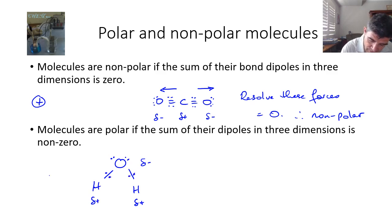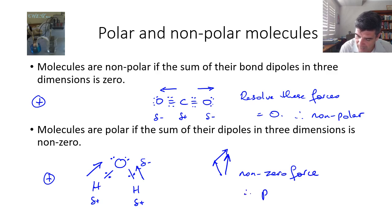In this case, if we take our point positive charge and put it here, it will go in this direction. If we put it here, it will go in this direction. If we add these together, that plus that, then we get a resultant direction, which means we have a non-zero force, and therefore we have a polar molecule.